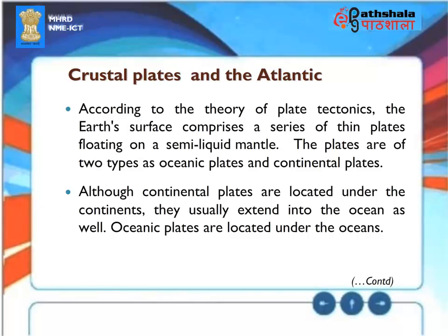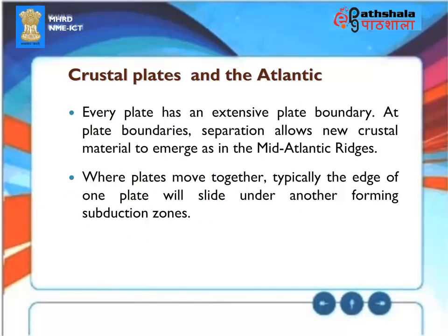Crustal Plates and the Atlantic: According to the theory of plate tectonics, the Earth's surface comprises a series of thin plates floating on a semi-liquid mantle. Plates are of two types: oceanic plates and continental plates. Continental plates extend into the ocean as well. At plate boundaries, separation allows new crustal material to emerge as in the mid-Atlantic ridges. Where plates move together, the edge of one plate slides under another, forming subduction zones.